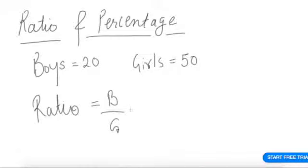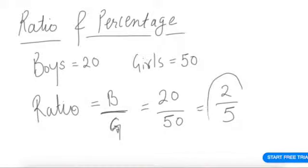In this class, when I say boys to girls, it means boys divided by girls. 20 boys and 50 girls in the class, so the ratio is B/G = 20/50 = 2/5. What does that mean? It clearly means that for